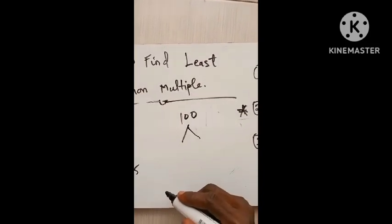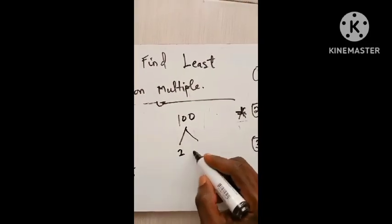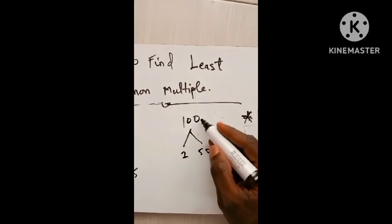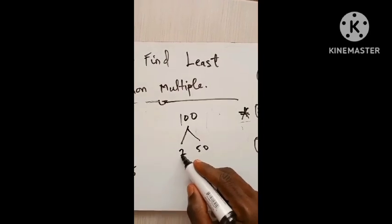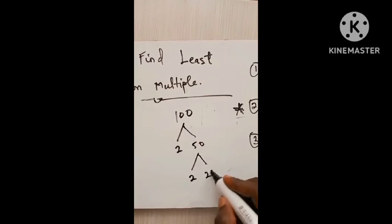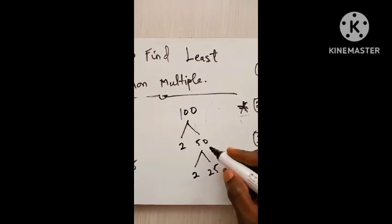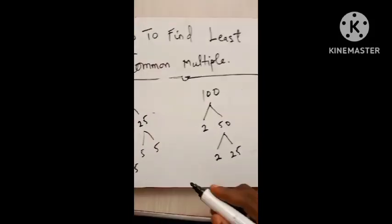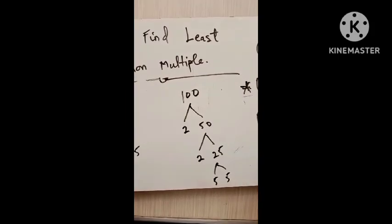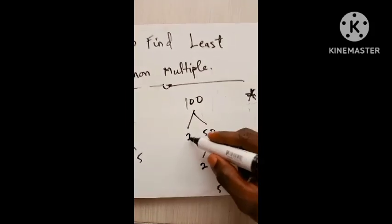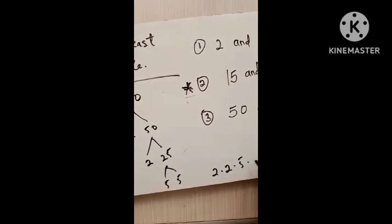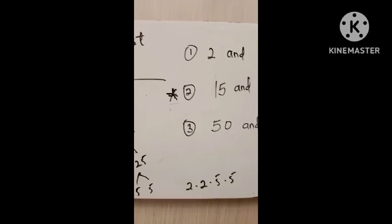Now finding the prime factors of 100 using the same tree method: 100 equals 2 multiplied by 50. So 2 is a prime factor. Then 50 gives us 2 multiplied by 25. And 25 gives us 5 multiplied by 5. So the prime factors of 100 are 2, 2, 5, and 5.